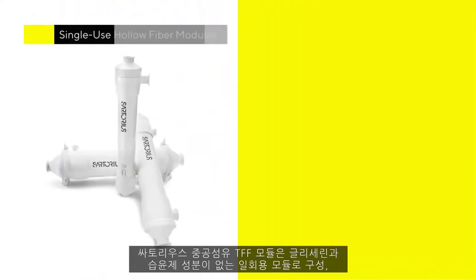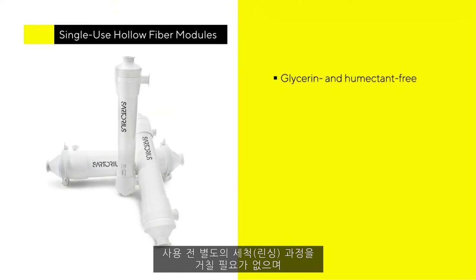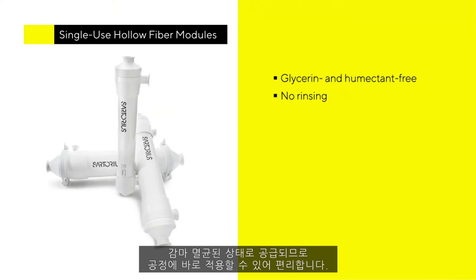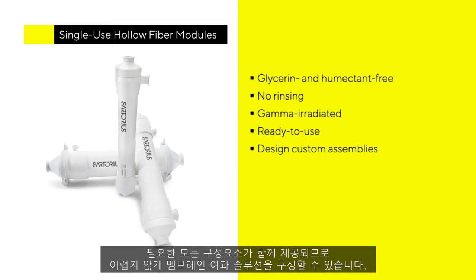Sartorius incorporates hollow fiber TFF into a single-use product featuring a unique glycerin and humectant-free membrane that eliminates the need for extensive rinsing prior to use. The units are delivered gamma irradiated and ready to use. Plus, they allow you to design complete flow assemblies with all components needed for a fully integrated membrane separation solution.